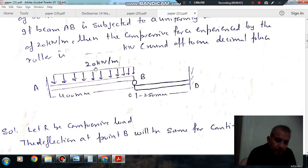So, this is your UDL and UDL is 20 kN per meter and this is 400 mm and this is your 250 mm. So this is A, this is B, this is C and this is D.